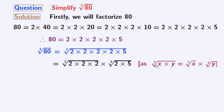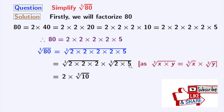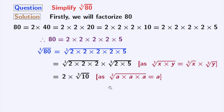Here, x is 2 times 2 times 2 and y is 2 times 5. From the first cube root we get 2, and from the second cube root we get cube root of 10. In the first cube root, we have used the rule that cube root of a times a times a is equal to a, where a is 2. After multiplication, we get 2 cube root of 10, and this is our final answer.